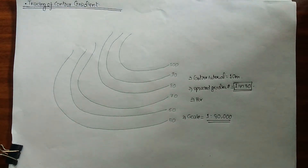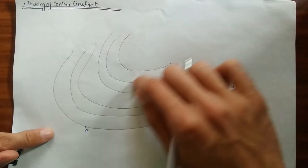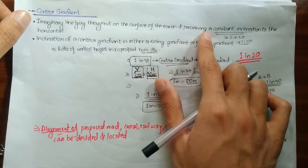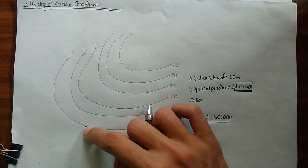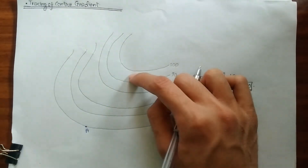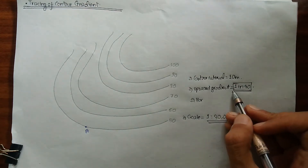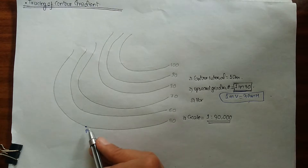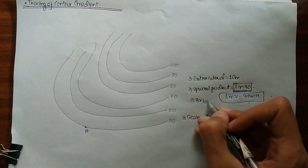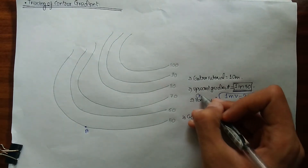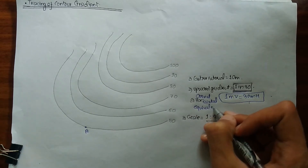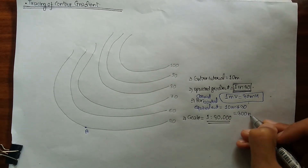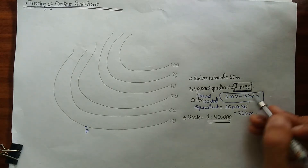I'll pick point A on the first contour line. The contour gradient is an imaginary line preserving a constant inclination — here 1 in 30, meaning 1 meter vertical rise per 30 meters horizontal distance. The ground horizontal equivalent is contour interval multiplied by gradient: 10 meters times 30 equals 300 meters. We then scale this: at 1 to 30,000, our 300 meters on the ground equals 1 centimeter on paper.